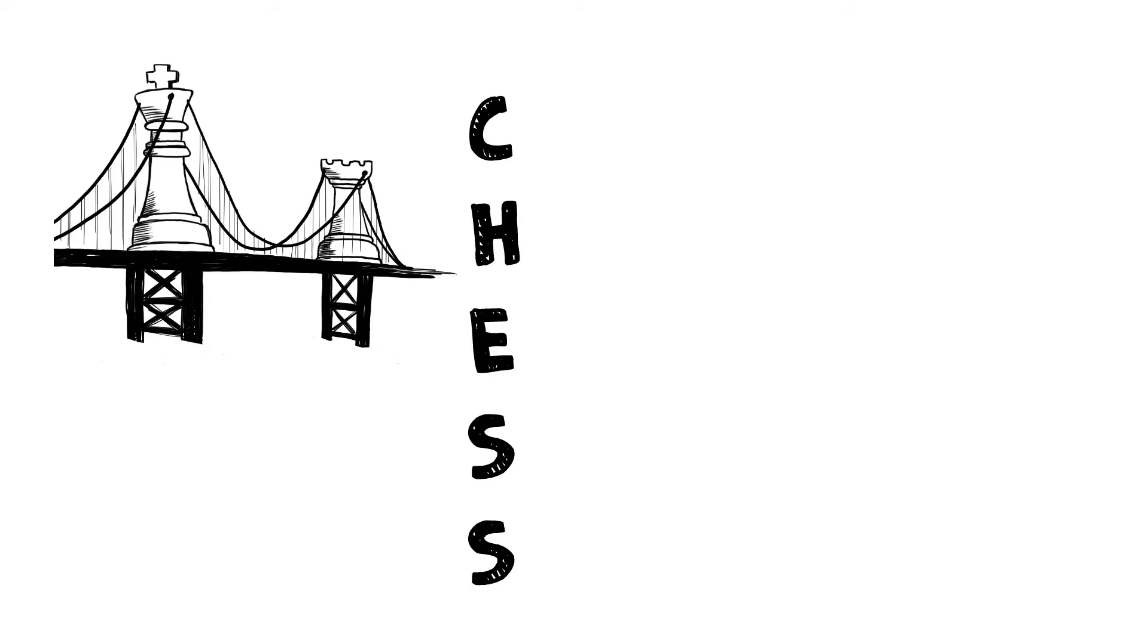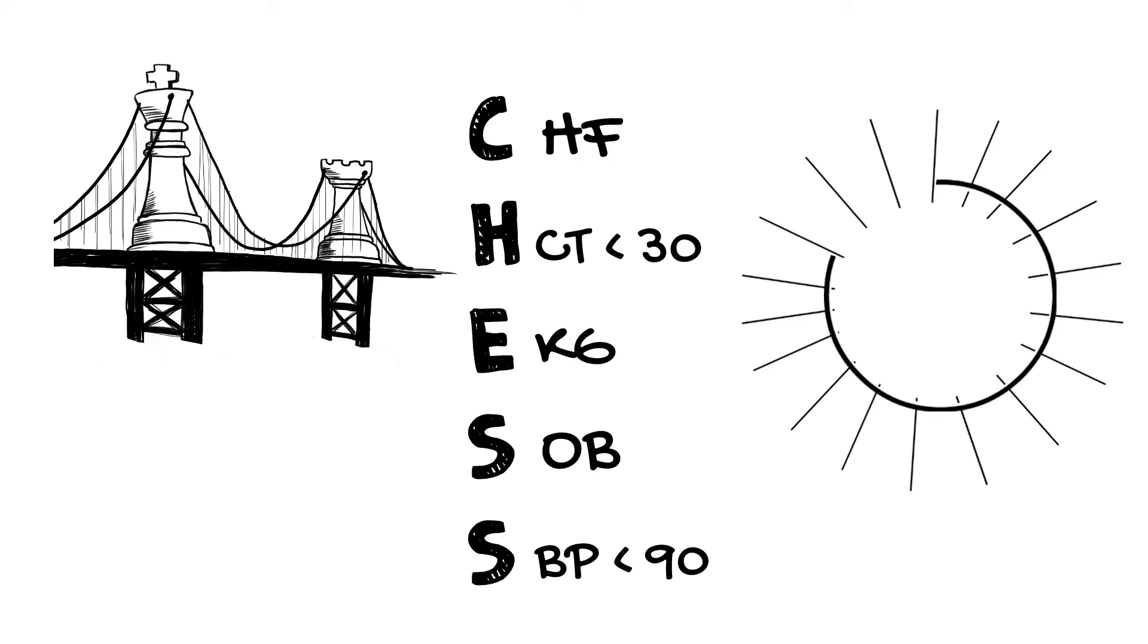Remember that CHEST mnemonic or the San Francisco Syncope Rule: is there evidence of cardiac failure, hemoglobin less than 30, abnormal EKG, shortness of breath, systolic blood pressure less than 90? If they say yes to any of those things, then they're a fairly high risk group. But remember, that is a blunt instrument - there's a lot of high risk patients that say no to all those things.